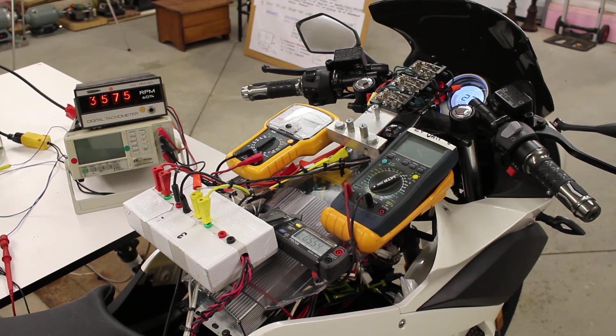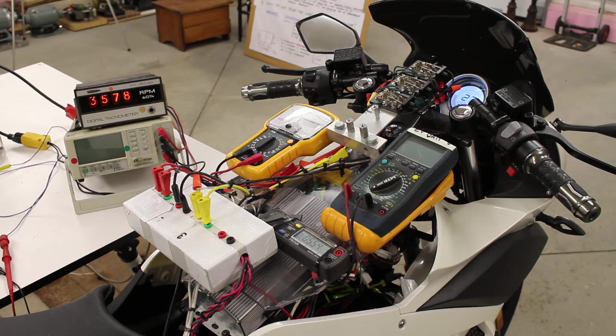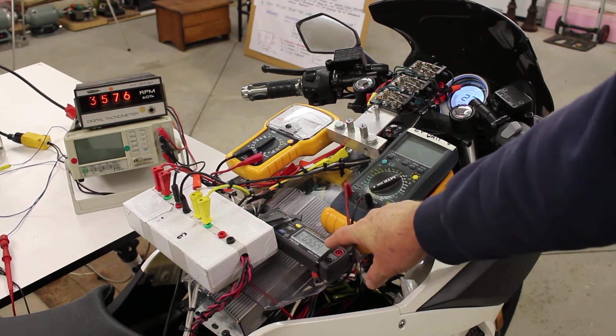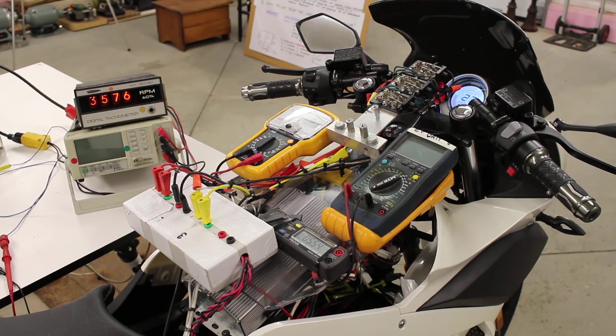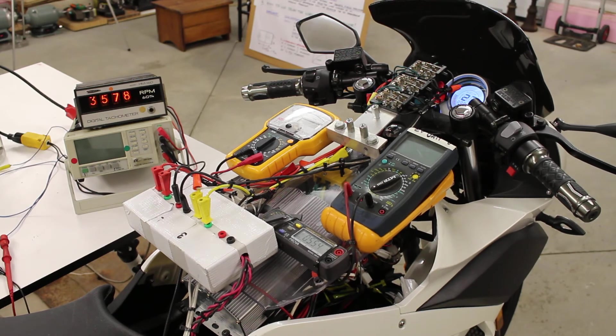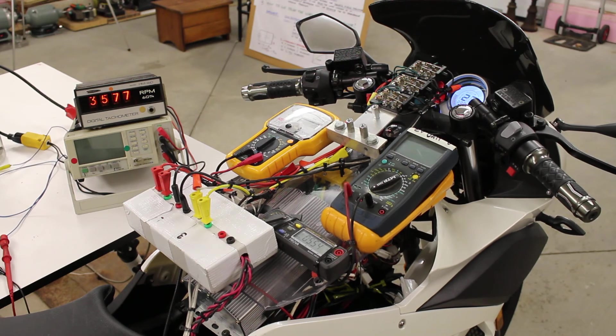3,575 RPM in RegenX acceleration mode with 5.54 amps going to the EV's batteries in RegenX acceleration.